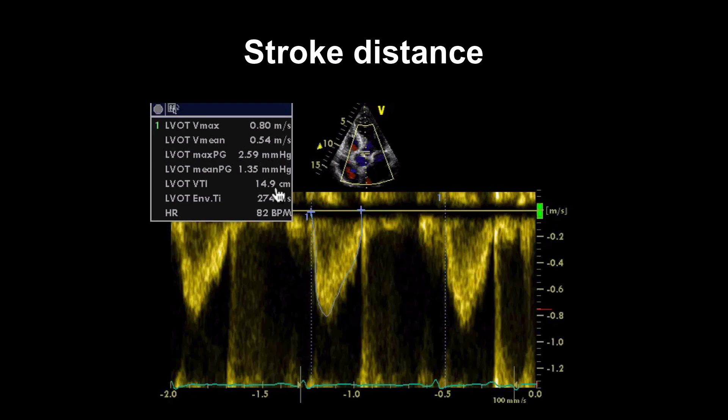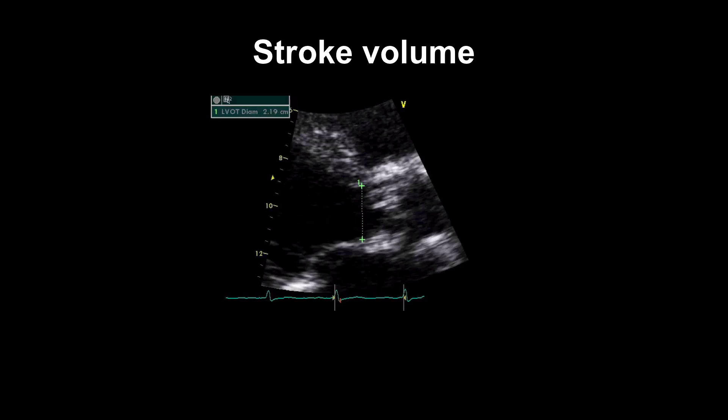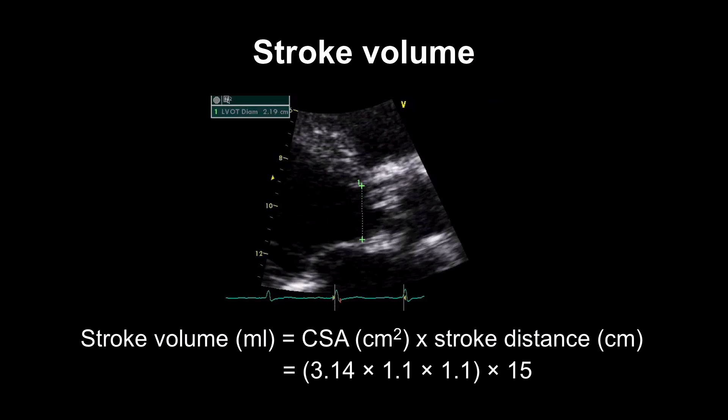Velocity time integral and stroke distance are the same thing, and the terms tend to be used interchangeably. So let's move on to stroke volume. So what we're doing here is we're measuring the diameter in the left ventricular outflow tract. It's giving us 2.2. And we're using that to work out the cross-sectional area using pi r squared and multiplying it by the stroke distance.